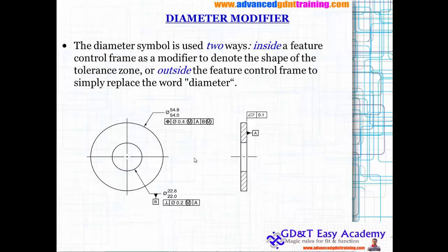in two ways: inside a feature control frame as a modifier to denote the shape of the tolerance zone, and outside the feature control frame to simply replace the word diameter. So this is just the diameter, but inside this is the tolerance zone with the material modifier.